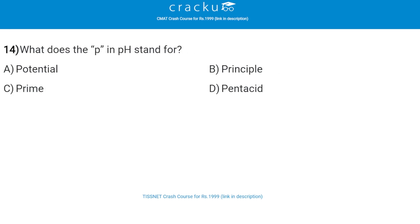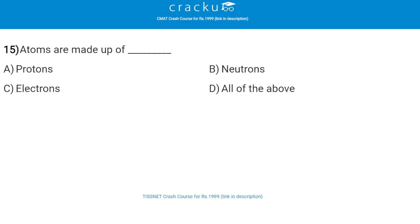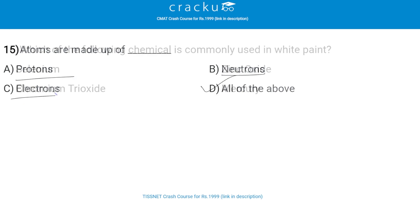Next: what does the P in pH stand for? The correct answer is potential, that is option A. pH stands for hydrogen potential. Next: atoms are made up of — the correct answer is all of the above: protons, neutrons, and electrons.